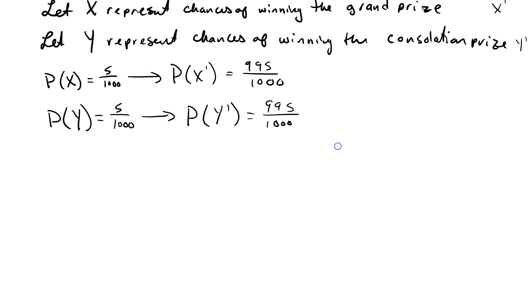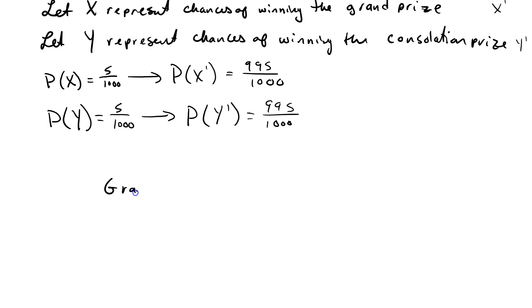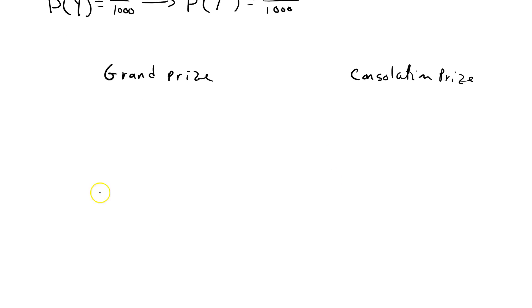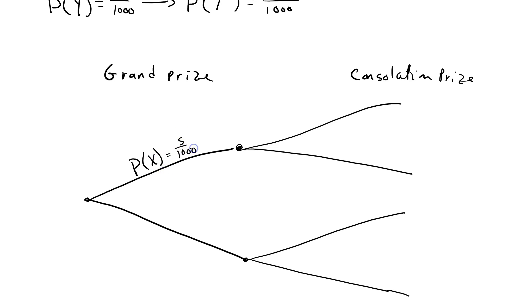So, let's draw this tree diagram. The first leg of the journey is going to be our grand prize. The second leg is going to be our consolation. So, winning or not winning the grand prize, and then winning or not winning the consolation prize. Probability of winning is 5 out of 1,000. Probability of not winning the grand prize is 995 out of 1,000. The consolation prize, chances of winning are 5 out of 1,000. Chances of not winning is 995 out of 1,000.